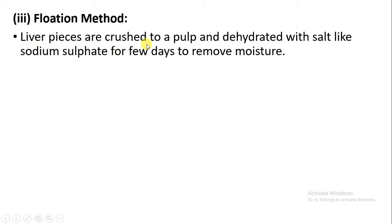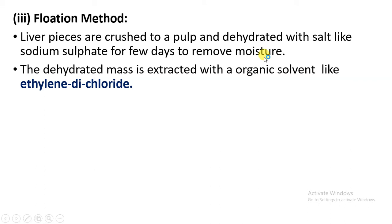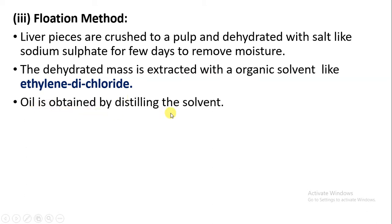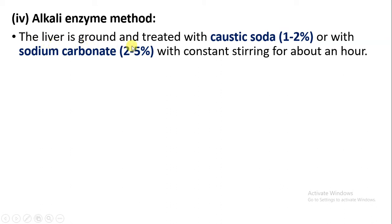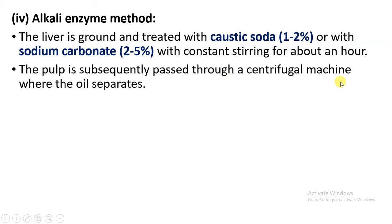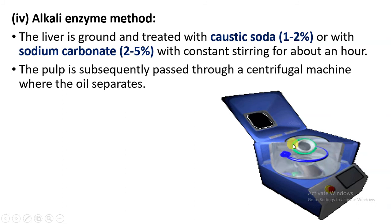The third method is the floating method. The liver is cut into pieces, crushed, and the resulting pulp is dehydrated using salt like sodium sulphate to remove excess moisture. Then dehydration is done using an organic solvent like ethylene dichloride, causing the oil to release by the process of distillation. This is a costly process. The fourth is the alkali enzyme method: fish liver is treated with about 1 to 2 percent caustic soda, then treated with sodium carbonate with constant stirring for about an hour. The resulting pulp is placed in a centrifugation machine to separate the oil.